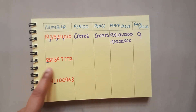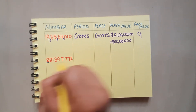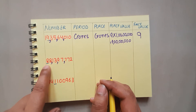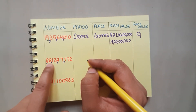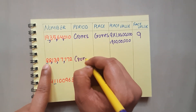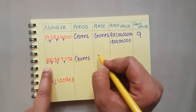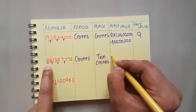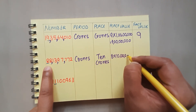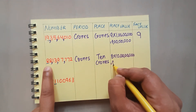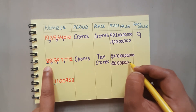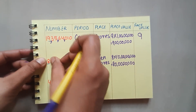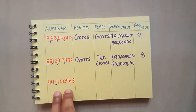Let me solve one more question. This is again a large number. Let's put the commas and separate the number according to periods — ones period, thousands period, lakhs period. The underlined digit eight is in the crores period. What is the place? Ten crores. What is the place value? Eight into ten crores equals 80 crores. What is the face value? It doesn't matter whether it is at crores or ten crores — the digit you are looking at is eight, so face value is eight.